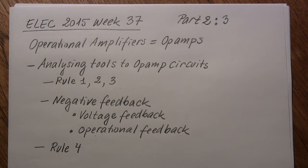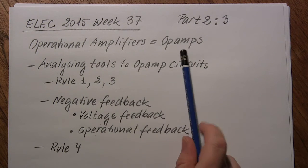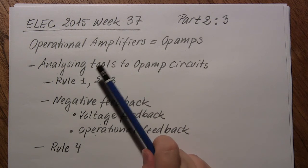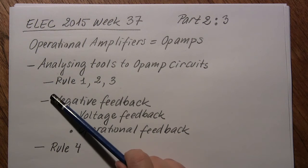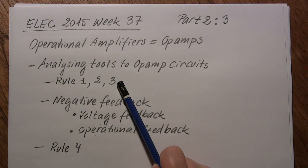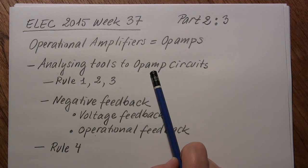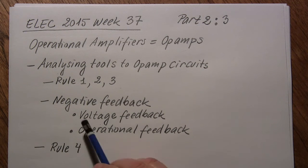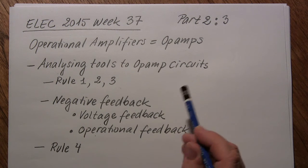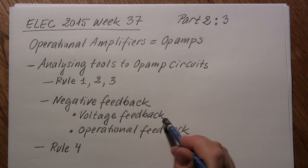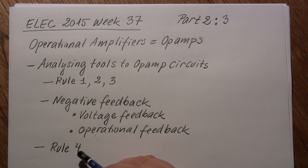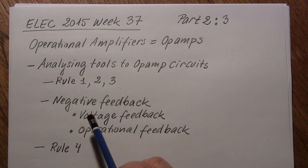Welcome to ELEC week 37 part 2. We are still looking at operational amplifiers, and now we are going to look at some analyzing tools. We have rules 1, 2 and 3 that help us analyze op-amp circuits. Then we are going to look at negative feedback — what it is — and we have two types: voltage feedback and operational feedback. And then we have another rule, rule 4. These are the most important analyzing tools for op-amp circuits.